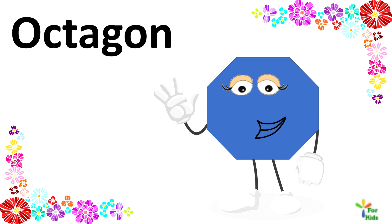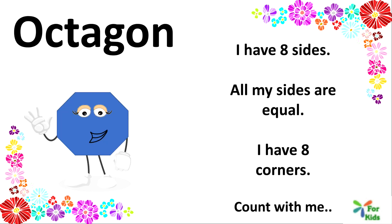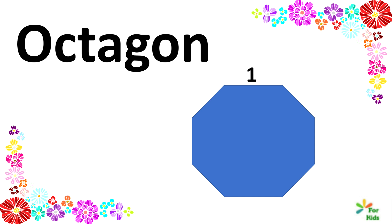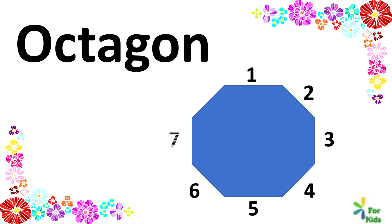Octagon. Say hi to octagon. I have eight sides. All my sides are equal. I have eight corners. Count with me. One, two, three, four, five, six, seven, eight. Octagon. Say it with me. Octagon.